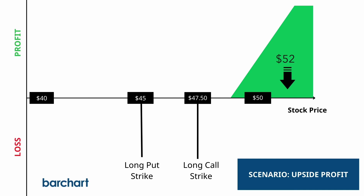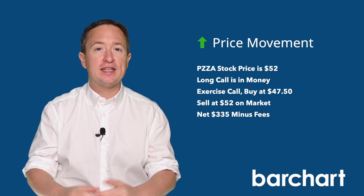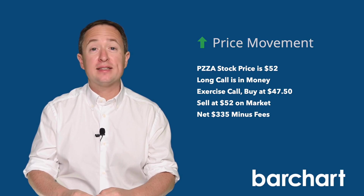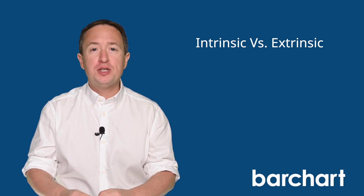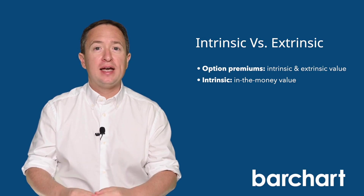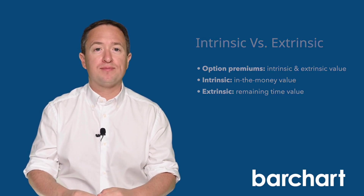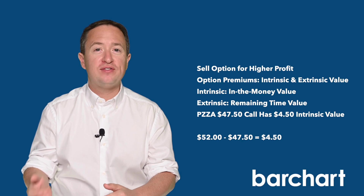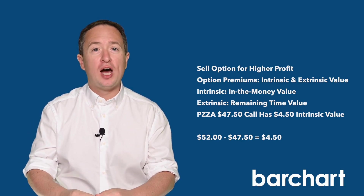Let's say that Papa John's stock price increases to $52 before expiration. That means your long call trade is now in the money. You can exercise the long call and buy 100 Papa John's shares for $47.50 each, and then sell them to the market for $52, making $335 less any trade fees. However, if your option still has a few days before expiration, you can sell it instead of exercising it and likely earn more. Option premium prices are made of intrinsic and extrinsic value. The intrinsic value is how much the option is in the money, and the extrinsic value is the time value that remains. So if Papa John's is trading at $52, your $47.50 strike call has $4.50 of intrinsic value, but its premium could be higher due to the time value left on the option.